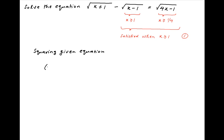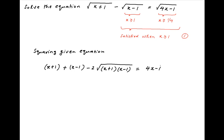Now squaring the given equation, we get x plus 1 plus x minus 1 minus 2 times the square root of (x+1)(x−1) is equal to 4x minus 1. This simplifies to minus 2 times the square root of (x+1)(x−1) is equal to 2x minus 1.